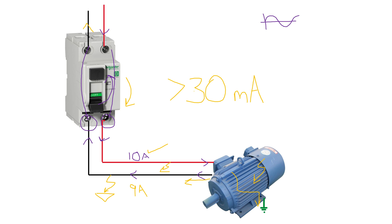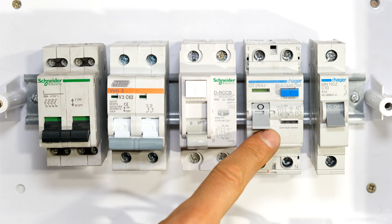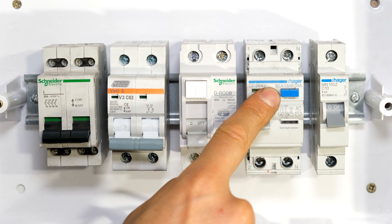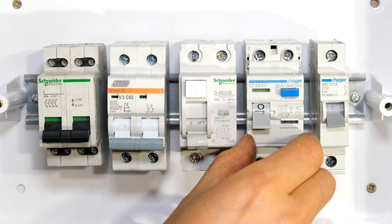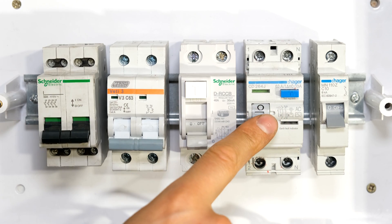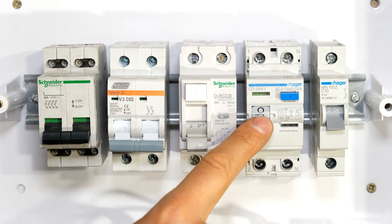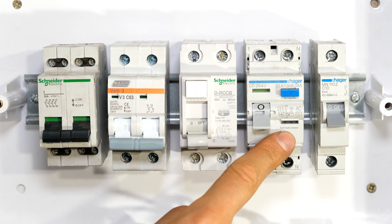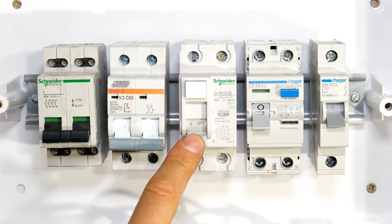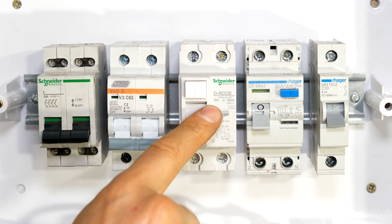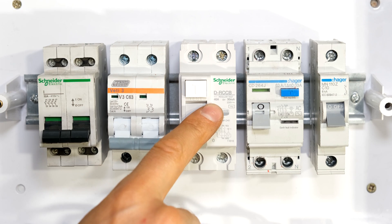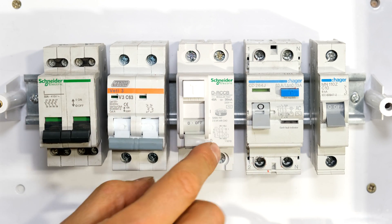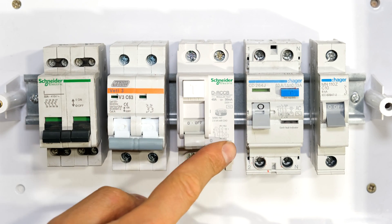30 milliamps is the maximum difference in current that the RCD should allow. What this particular one doesn't have is overcurrent protection. It can handle 63 amps traveling through the circuit breaker, but if you exceed that, you may damage the circuit breaker — it will not trip and will not open the circuit if there's an overload. This is only to measure the difference between live and neutral. The one to the left is the same, just rated at a lower current — 40 amps — so it can handle a 40 amp load, but this too will not trip if you exceed that current. It also works by measuring the difference between these two terminals.